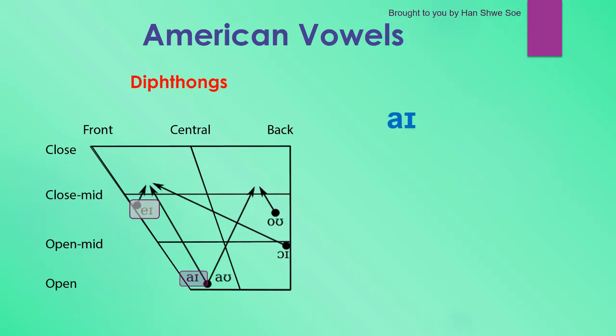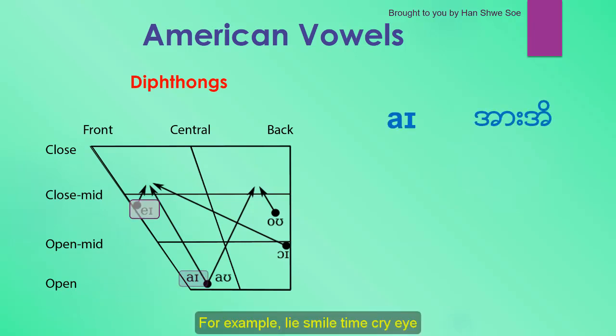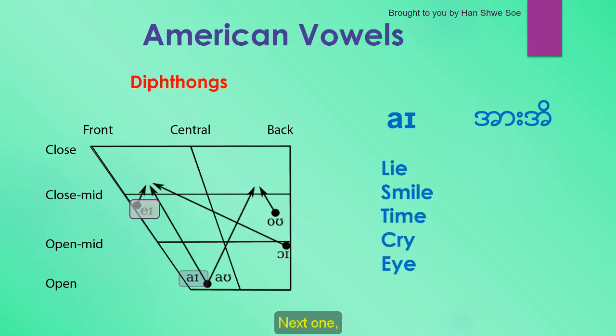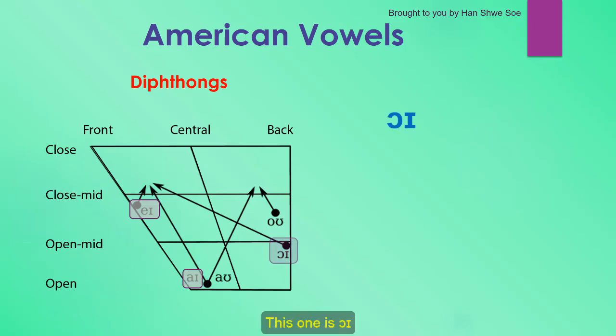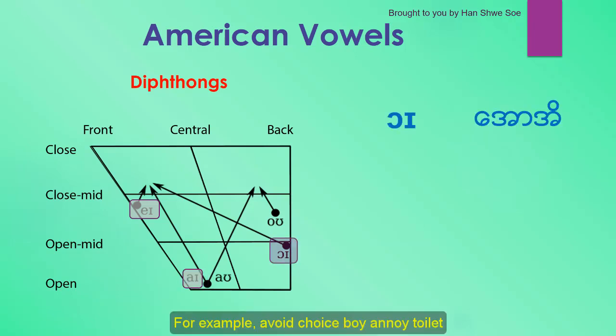The next diphthong is the AI sound. For example: lie, smile, time, cry, I. The next one is the OI sound. For example: avoid, choice, boy, annoy, toilet.